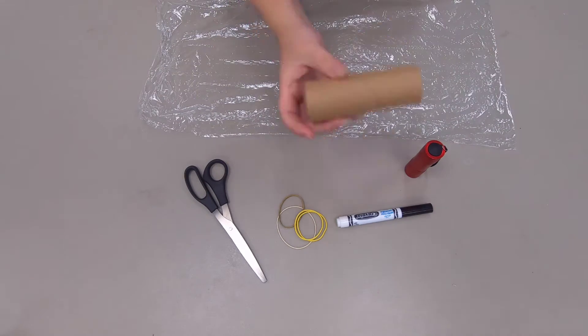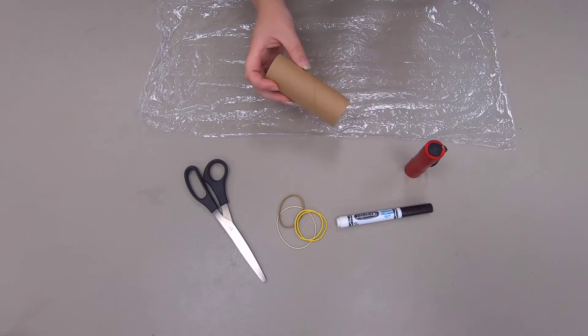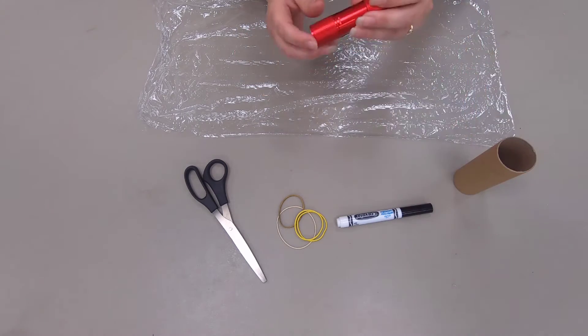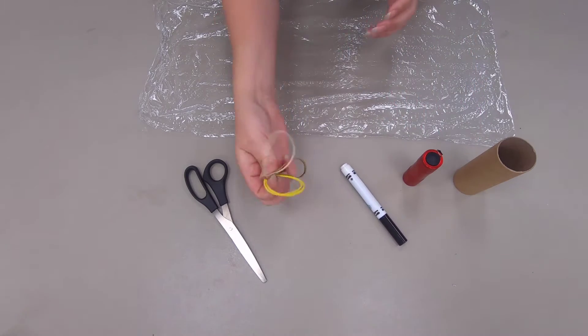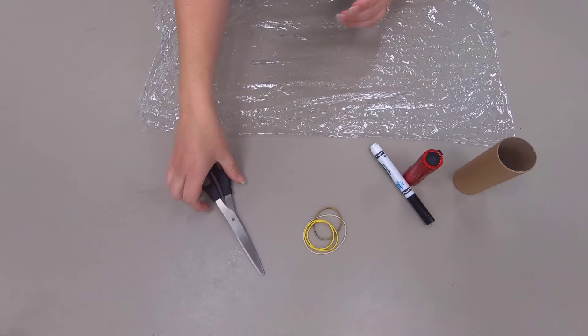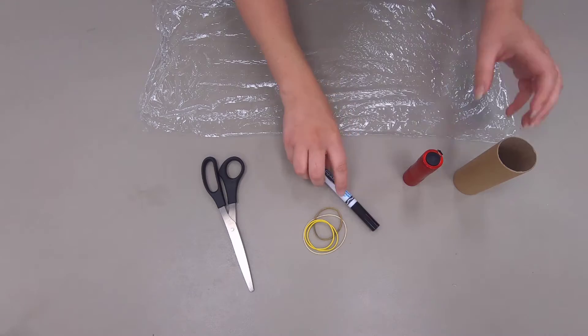A toilet paper roll - if you don't have one now, if you wait a couple days you might have one. You'll need a flashlight, a black marker, you just need one rubber band. I brought a couple just in case, and a pair of scissors to help cut this.